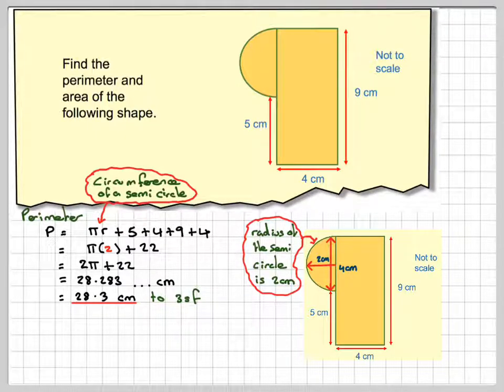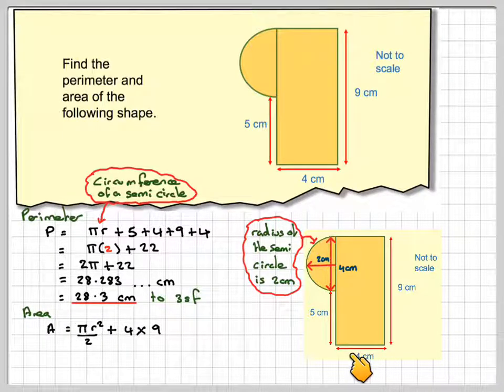For the second part, we have to find the area. Well, the rectangle is quite easy, but we've got to remember here we have a semicircle. The area of the circle is pi r squared, but we want half of it, so it's going to be pi r squared over 2 plus the length times the width of the rectangle, which is 4 times 9.